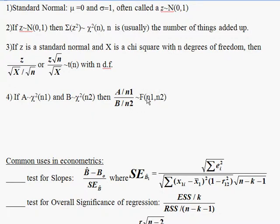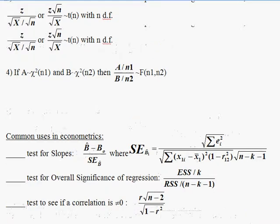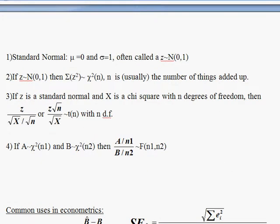So chi-square a divided by its degrees of freedom, over chi-square b divided by its degrees of freedom, gives an F. An F has two degrees of freedom: one for the numerator and one for the denominator. You want to reach the point in your statistics and econometrics career where you don't need to memorize when to use chi-squared or F — if you know what these four distributions are, you can see the pattern.